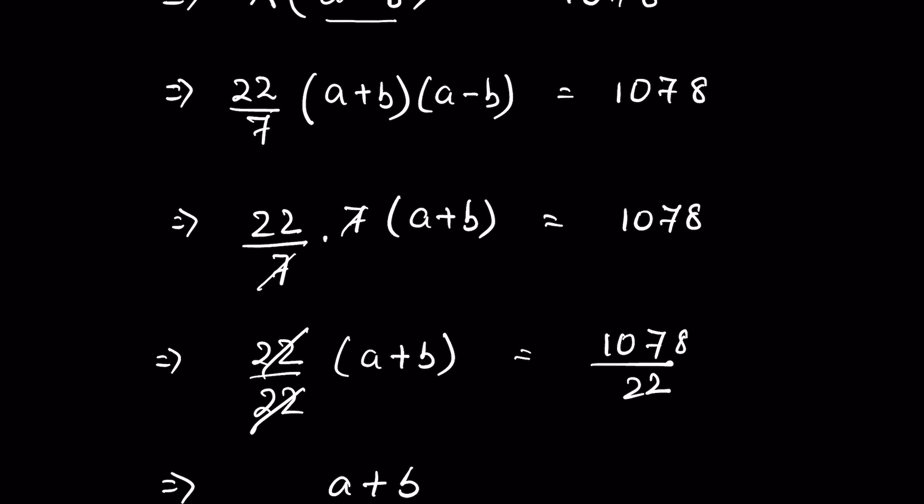We get a plus b equals 1078 divided by 22. Now both the numbers are divisible by 2 because they have even numbers at the ends. We divide both of them by 2: 2 times 11 is 22, 2 times 5 is 10, 2 times 3 is 6, and 2 times 9 is 18, and 11 times 4 is 44. 9 is carry over. Now this is 99. 11 times 9 is 99. So a plus b is 49.